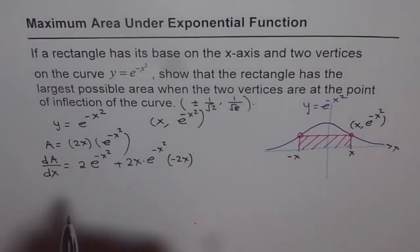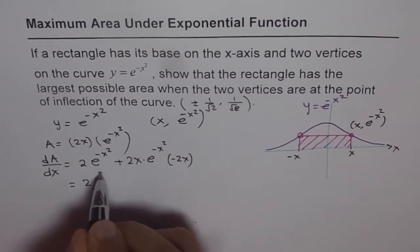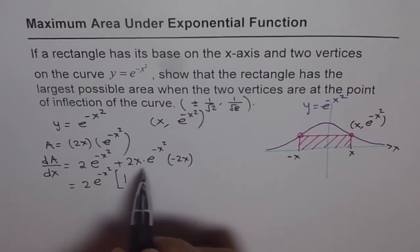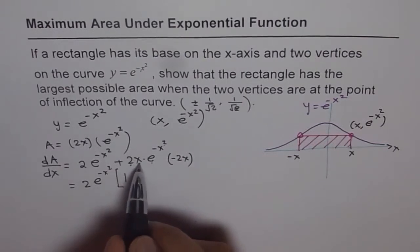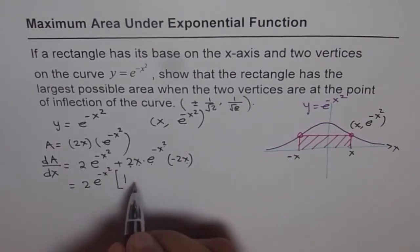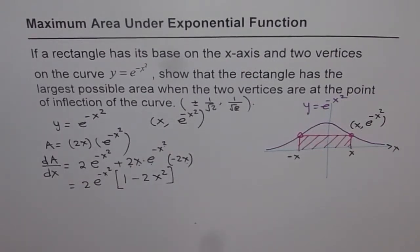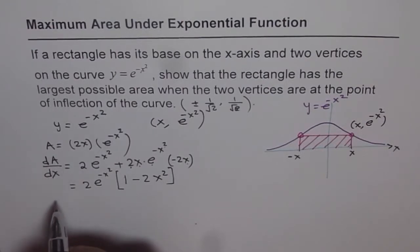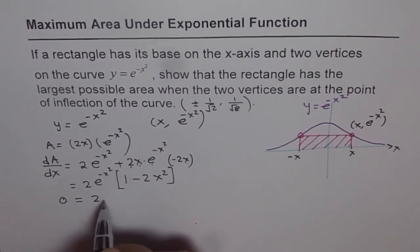We can simplify by factoring out 2e to the power of minus x squared. The first term gives 1, and from the second term we are left with minus 2x squared. So dA/dx equals 2e to the power of minus x squared times (1 minus 2x squared). To find a critical point, we set dA/dx equal to 0 and figure out when this expression equals zero.